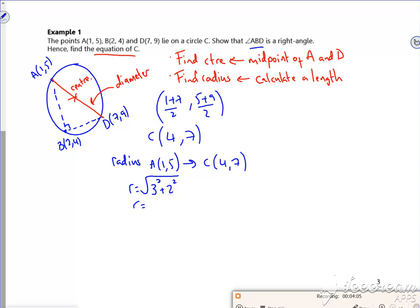Is that right? I think I'm rushing this. That's root 13. So I've got a circle: x minus 4 squared, y minus 7 squared is 13. Right, so I've done this bit here. What I didn't do is this bit here.